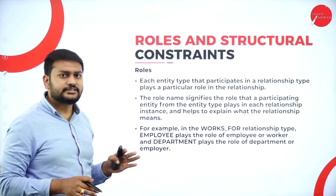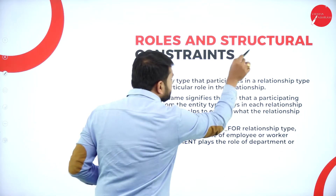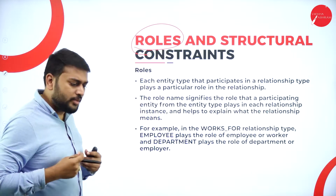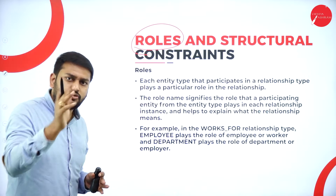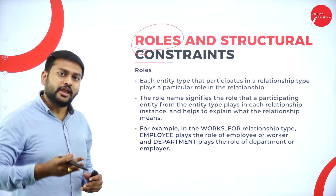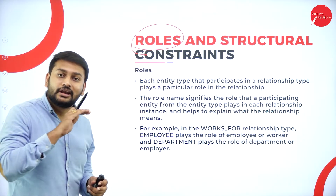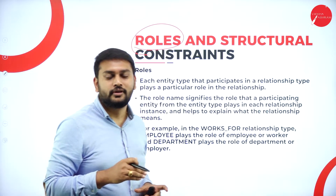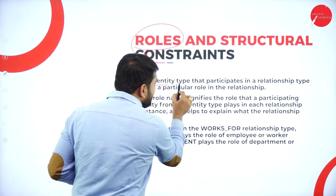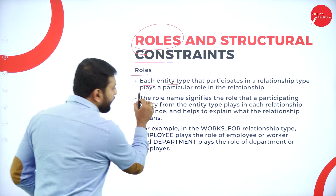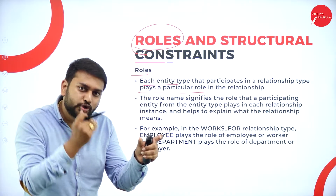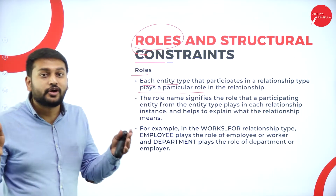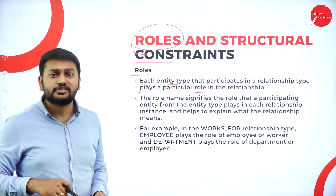Now let's talk about roles. I am a teacher — I am performing the role of teacher. You are a student — you are performing the role of student. In the same way, in an ER diagram, one entity performs a particular role in a relationship. We assign a name to that role. Each entity type participates in a relationship type and plays a particular role in that relationship.